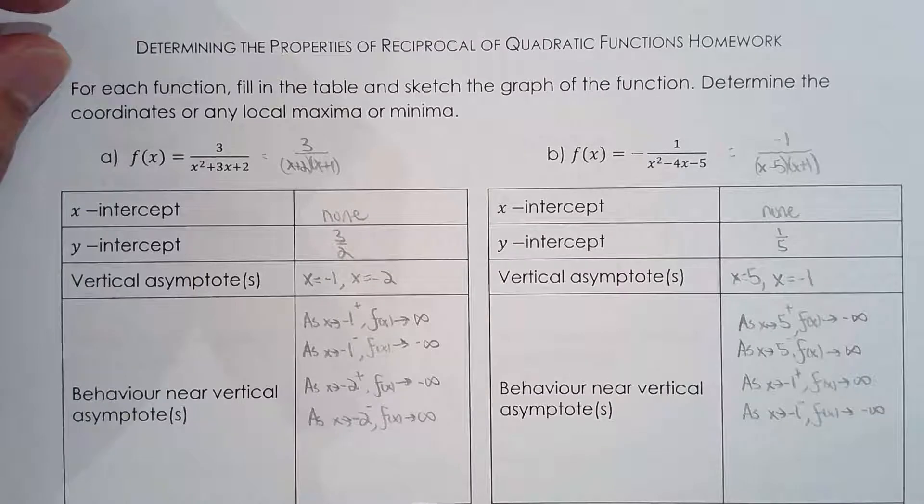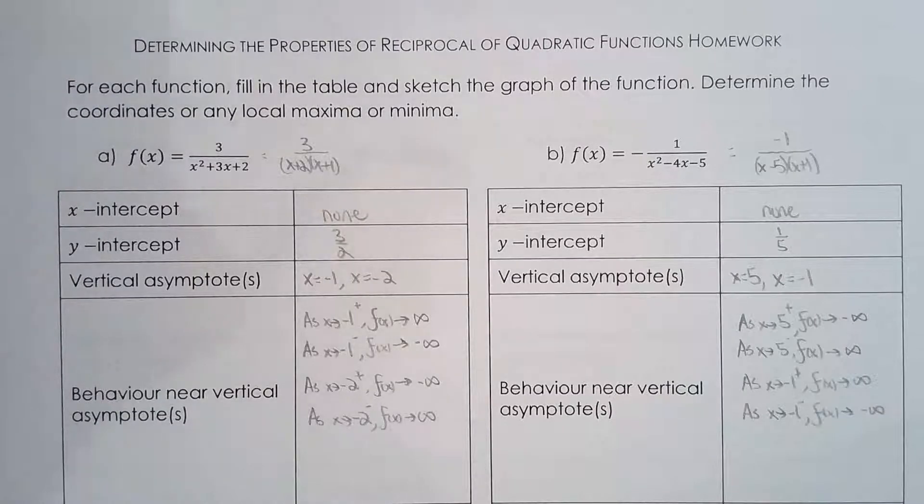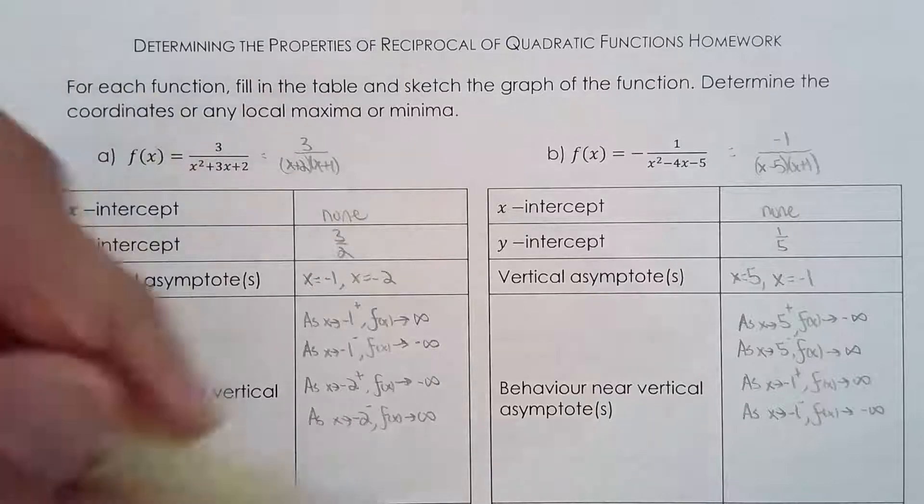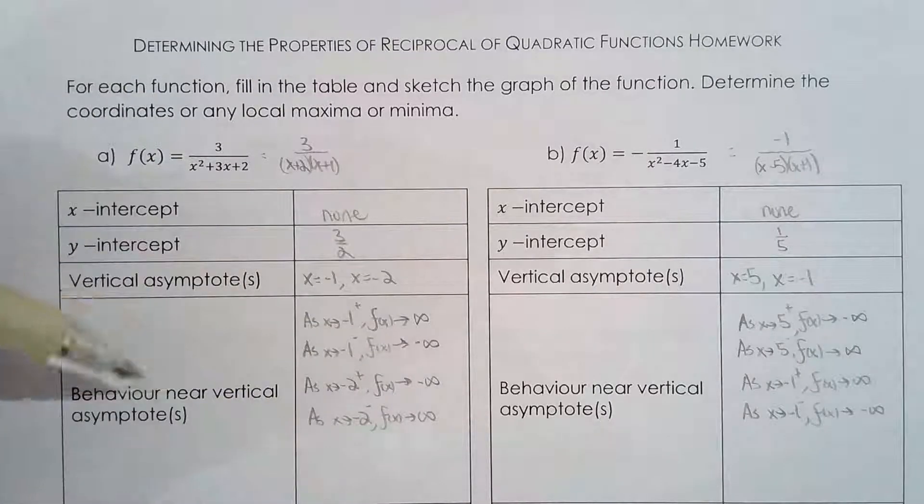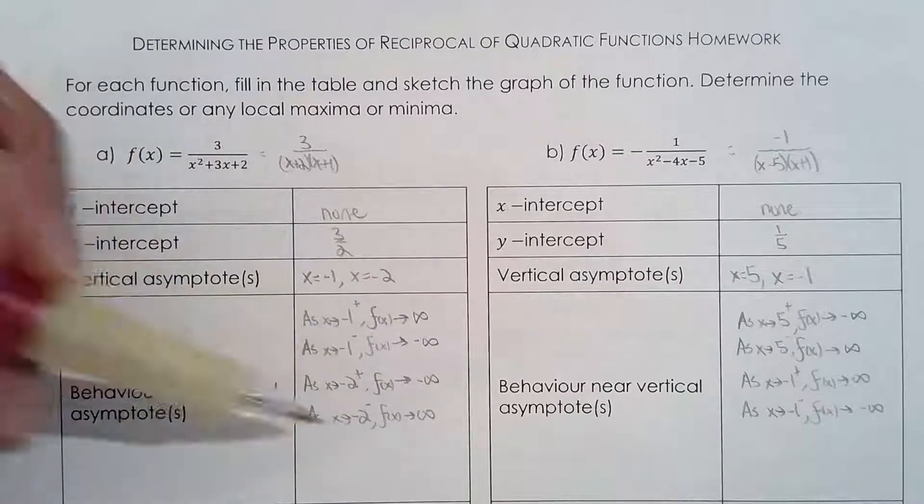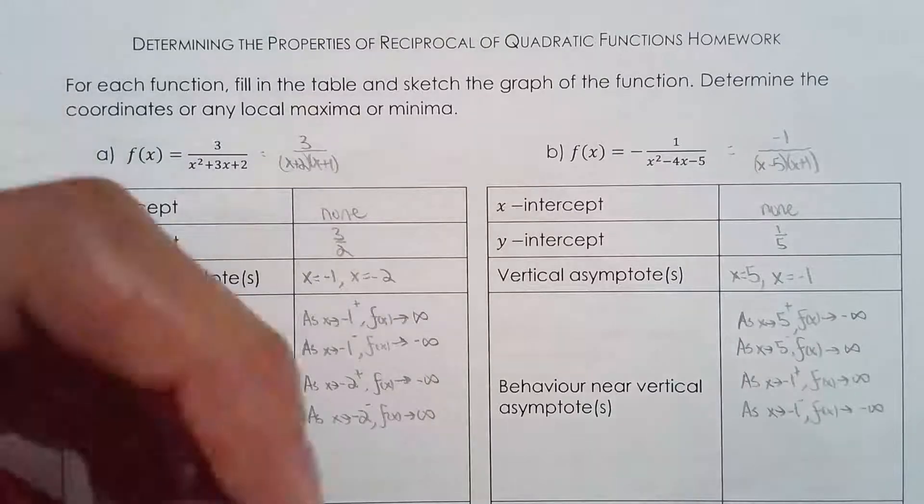My strategy for all these are the same: find intercepts, find asymptotes, and then I can just piece together everything and then reverse engineer and come back to these, like behavior near vertical asymptotes and behavior. I always come back to it.